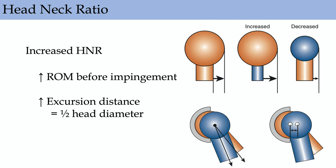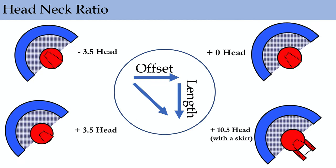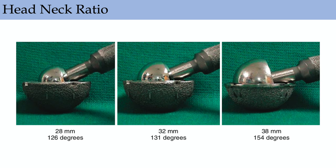Regarding head-neck ratio: the larger the head and the increased excursion distance, the less risk of impingement — maximize the head-neck ratio. Larger heads give greater range of motion before impingement. The only risk for larger heads on smaller trunnions is taper corrosion due to large cantilever bending forces. Different neck lengths — plus 3, plus 5, plus 10 — give more offset and length. Avoid skirts if possible as they increase forces and impingement risk.